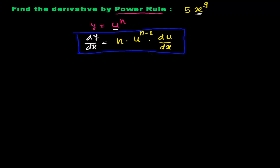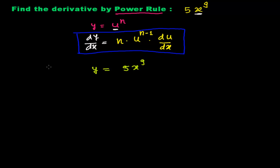Let me give you an example. Here the function is y equals 5 times x to the power 9. First I need to identify what my variable is and by what power it has been raised. Here 5 is the constant — any coefficient we generally separate out. So x is my variable and 9 is my power.